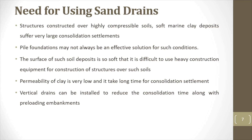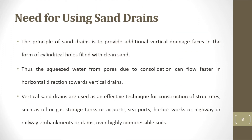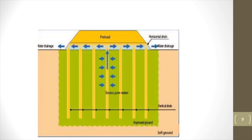The water expelled from the pores will directly go to these vertical drains, so that the travelling time of the water is reduced. The principle of sand drains is to provide additional vertical drainage paths in the form of cylindrical holes, so that the squeezed water from the pores due to consolidation can flow faster to the sand drains. Vertical sand drains are used as an effective technique for construction of structures such as oil and gas storage, airports, seaports, harbors, and more. In the figure, you can see the passage of water from the clay to the vertical drain. The arrows show the passage of water, and once it reaches the drain, it moves up through the drainage blanket provided over it and is expelled out.